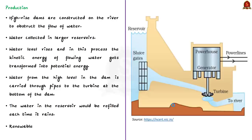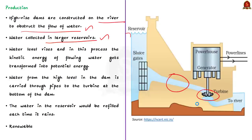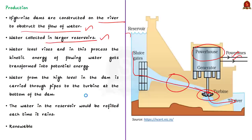In order to produce hydroelectricity, high-rise dams are constructed on rivers to obstruct the flow of water, collecting water in large reservoirs. The water from the high level in the dam is carried through pipes into a turbine room at the bottom of the dam. The turbine is attached to a generator which generates electricity when the turbine rotates. After passing through the turbine, the water is again released into the river. This is how a hydropower project generates electricity. The water in the reservoir is refilled each time it rains, making hydropower projects a renewable source of energy, so we would not have to worry about hydroelectricity in the same way we worry about fossil fuels.